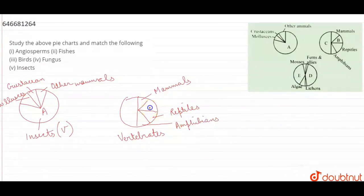So in this pie chart, B is equal to birds. That is option 3.